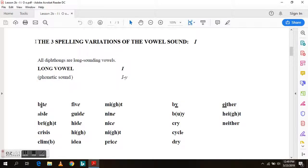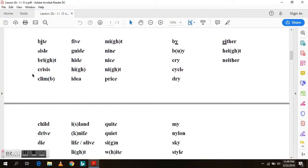Here are the 3 spelling variations of the vowel sound I. I is a long vowel and a diphthong and it sounds like ie. It is written with an I in words like bite and five. It is spelled with a Y as in by and an EI as in either.